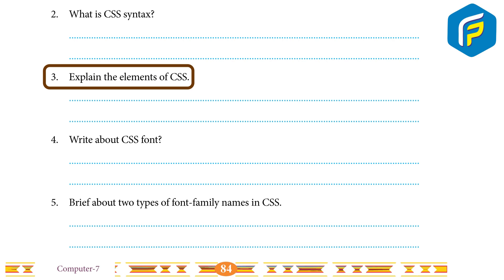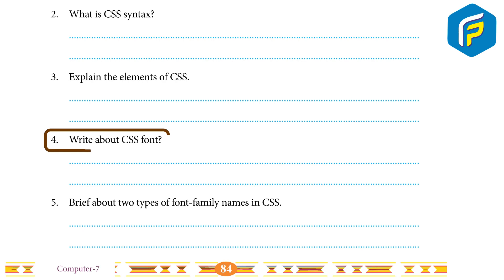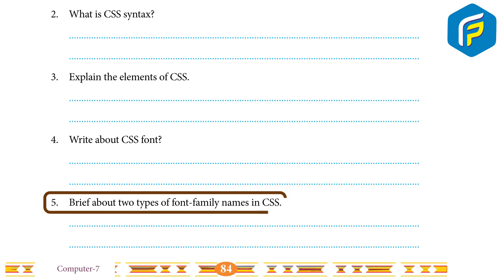3. Explain the elements of CSS. Answer: a CSS code consists of three important elements — selector, property, and value. 4. Write about CSS font. Answer: in CSS, changing the font style can be done in one of three different ways: (1) by only entering a color's name as a value, (2) by using predetermined hexadecimal color values, (3) by using the RGB color code.